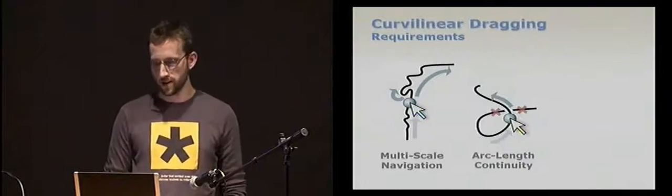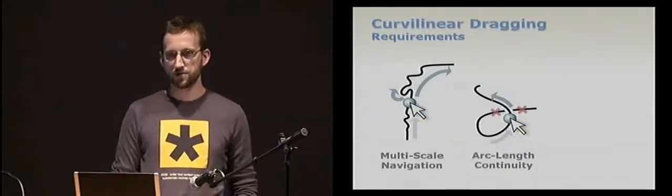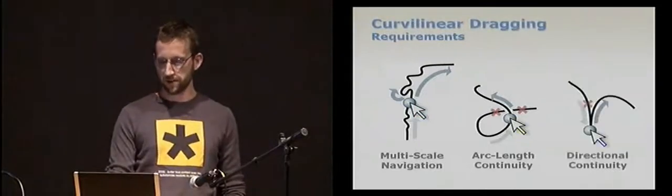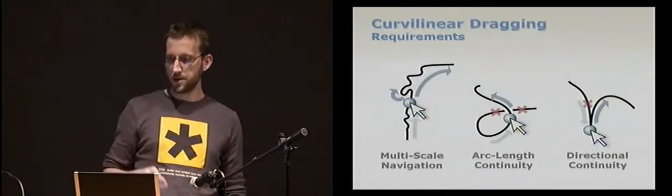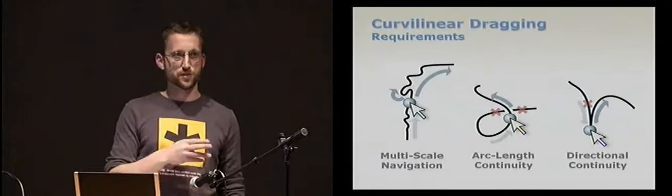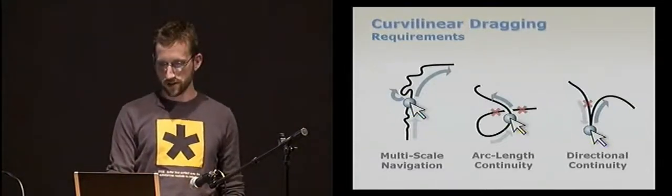So we postulated three basic requirements for curvilinear dragging. One is, it should support multi-scale navigation. The user should be able to follow small features of the curve, but should also be able to ignore them, and this is very important because we don't want the user to carefully follow the trajectories all the time. And we also need to be able to handle ambiguities, such as when the curve is intersecting itself, we want to preserve continuity of the cursor motion as much as possible. And finally, we also need a preference for directional continuity, so that the user is able to traverse a cusp like this.